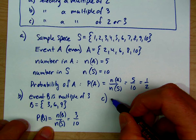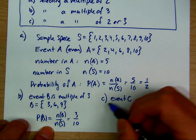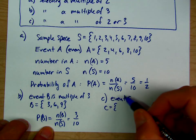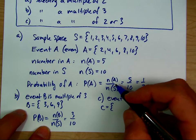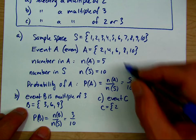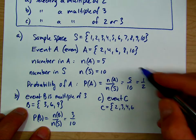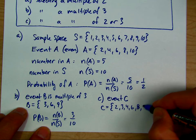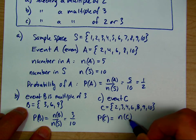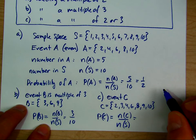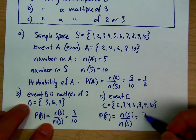Event C is a multiple of 2 or 3. C is the set of multiples of 2 combined with the multiples of 3, giving us 2, 3, 4, 6, 8, 9, 10. The probability of C is the number of elements of C over the number of elements of the sample space, which is 7 over 10.